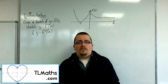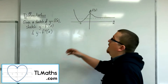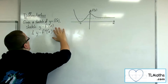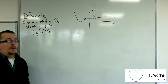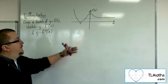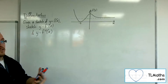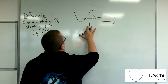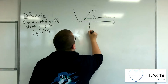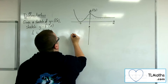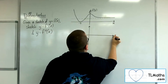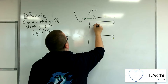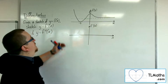Following on from the previous example, we're going to look at this curve here. We're going to see what the first and second derivatives look like — the gradient function of this curve and then its gradient function. We're going to draw some axes directly underneath so we can see how things are matching up. This will be the graph of f prime, the gradient function of this curve.